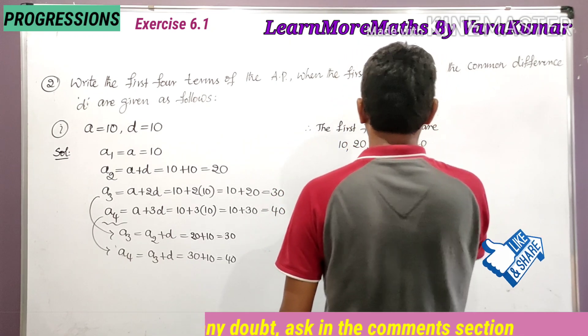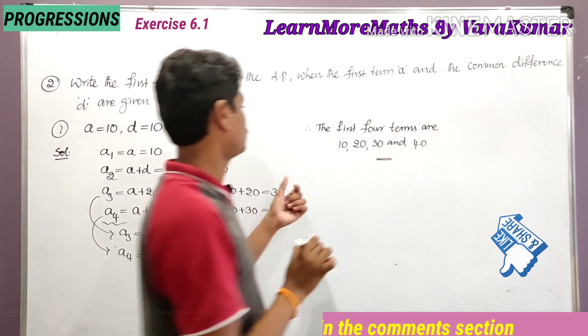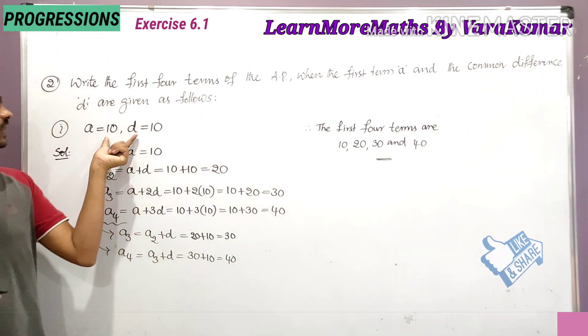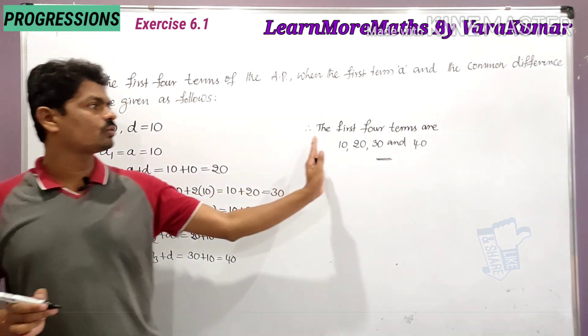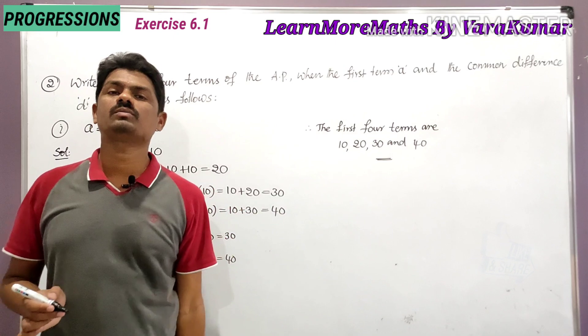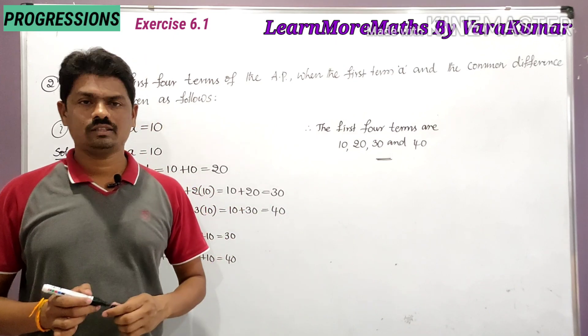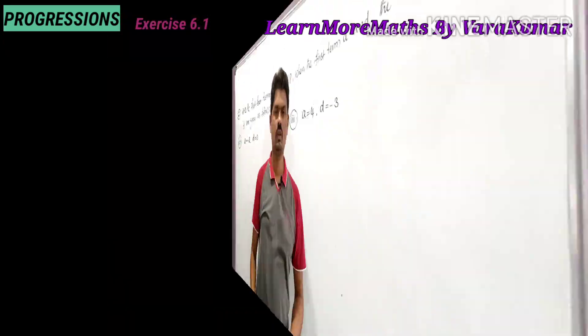Therefore, the first four terms are 10, 20, 30, and 40. By using the values of a and d, we have found the first four terms of the arithmetic progression.